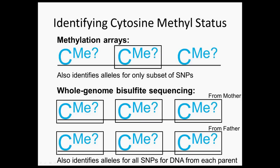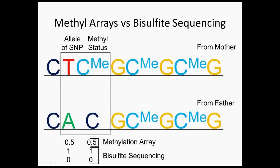Let us go back to our example of a heterozygous individual. In this example, let's say we have an indicator variable for our SNP that is a 1 if we have the T allele and a 0 if we have the A allele. And let's say we also have an indicator that's a 1 if methylated and a 0 if unmethylated. If we use the methylation array, we're going to be averaging across the two copies, so for our allele we will get a 0.5, and for our methylation status we will also get a 0.5.